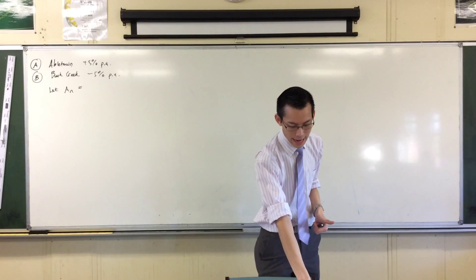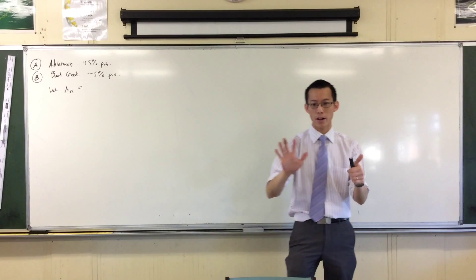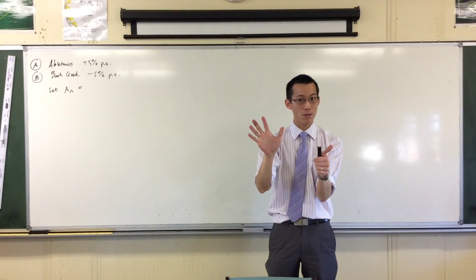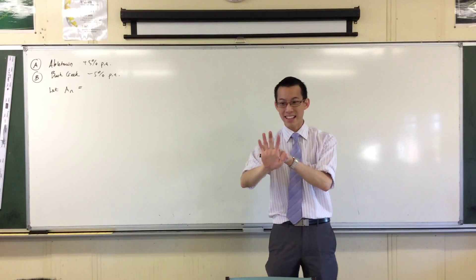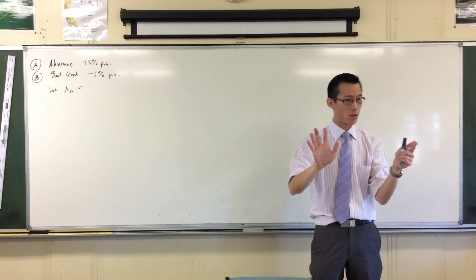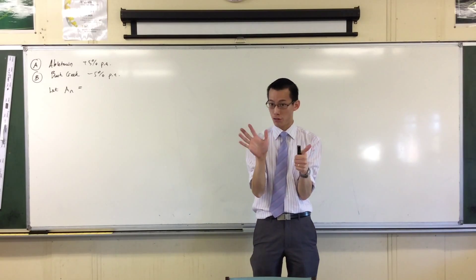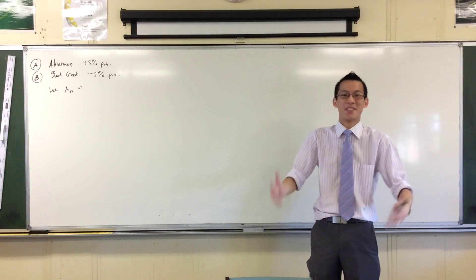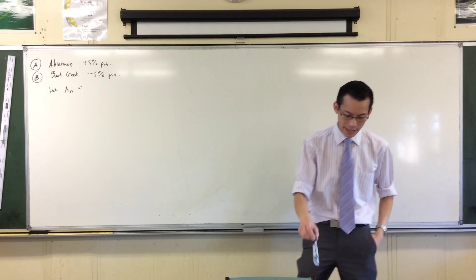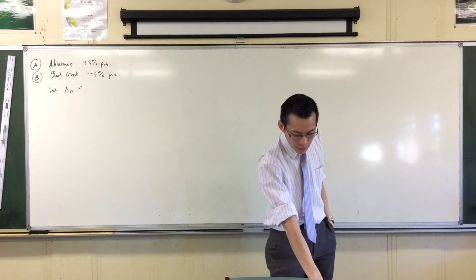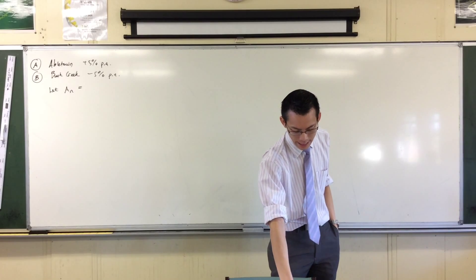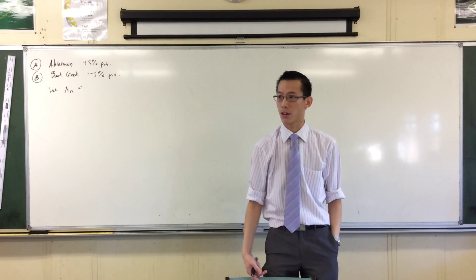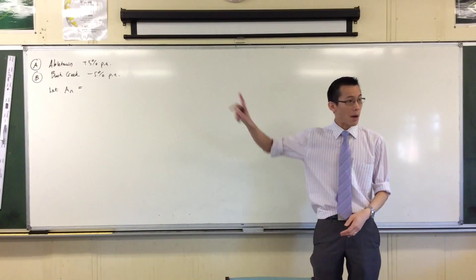I'm going to go for option two, which is more work. There are two reasons why. Number one, it's in an exercise about series, so I'm suspicious I'm going to have to add this eventually. And when I look at the later parts — for example part C — it says, what's the ratio of the total number attending one show over 25 years to the total attending the other show? So you're clearly going to have to do some summation here.